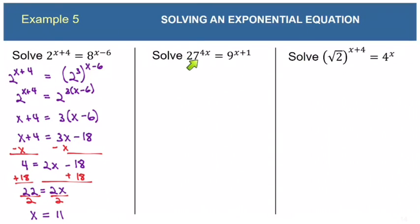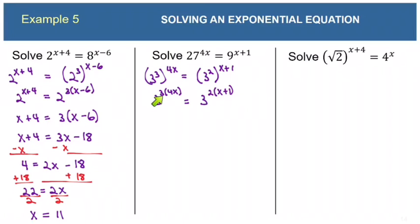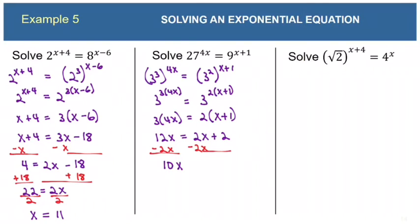Now try: 27^(4x) = 9^(x+1). Both numbers are powers of 3 — 27 = 3^3 and 9 = 3^2. So: (3^3)^(4x) = (3^2)^(x+1), which gives 3^(12x) = 3^(2(x+1)). Setting exponents equal: 12x = 2x + 2. Subtracting 2x from both sides: 10x = 2. Dividing by 10 gives x = 1/5.